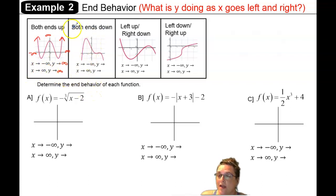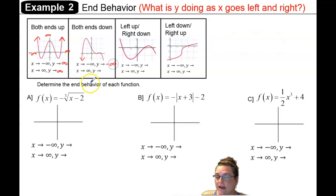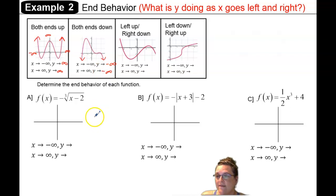If both ends are pointing down, then as x approaches negative infinity — and the same on the right — the end is headed down, so y is also approaching negative infinity. That's both ends down.